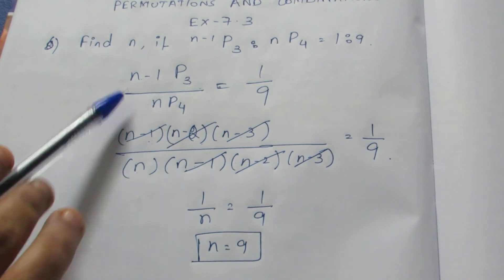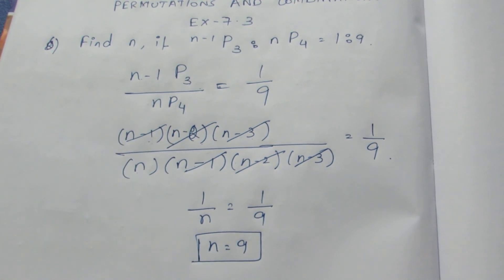This is the shortcut method to write permutations. N equals 9. That's all for this problem. Thank you.